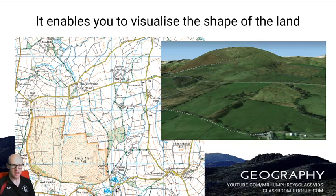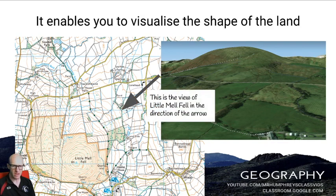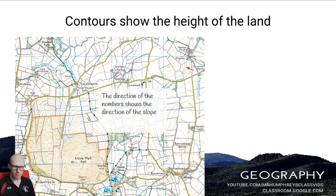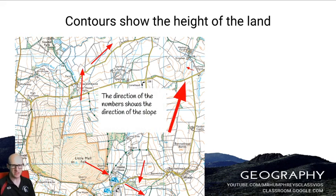Contours enable you to visualise the shape of the land. Here we have a picture of Mel Fell looking towards the south east, and you will hopefully be able to visualise that shape in your head on the map. Contours also show the direction of the slope — the way the numbers are written shows the direction in which the slope is facing.